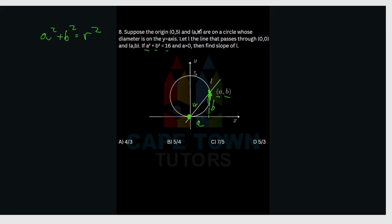The next thing we can look at is the theorem about angles that are inside a semicircle. We have a diameter, and a point on the circumference that we can connect to form a 90-degree angle. We know one length is 5 — from the origin (0,0) to (0,5) — this side would be a length of 5, this would be a length of 3, and then there's the length we need to figure out.